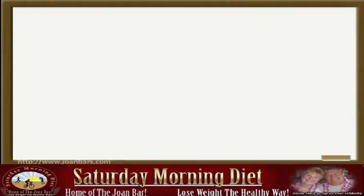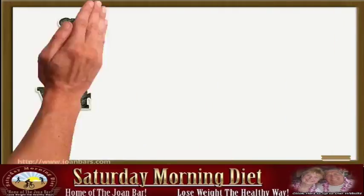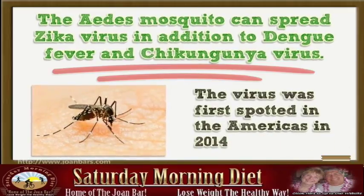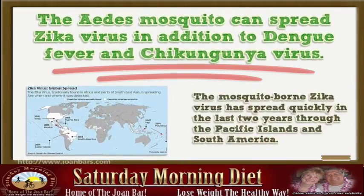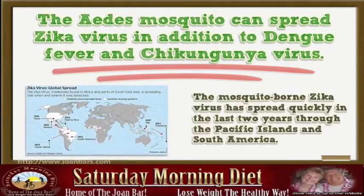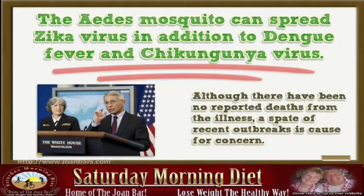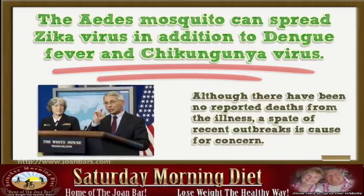Hi! Today I will talk about Zika virus which you need to know. The Aedes mosquito can spread Zika virus in addition to dengue fever and chikungunya virus. The virus was first spotted in the Americas in 2014. The mosquito-borne Zika virus has spread quickly in the last two years through the Pacific Islands and South America. Although there have been no reported deaths from the illness, a spate of recent outbreaks is cause for concern.